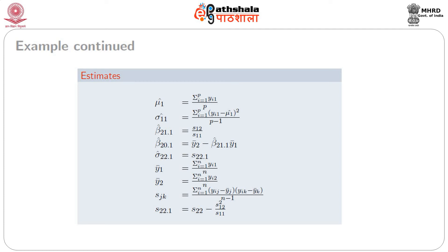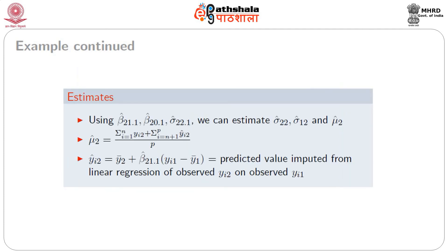Once we get beta_2_1.1 hat, beta_2_0.1 hat, and sigma_22.1 hat, we are in a position to get the estimates of mu_2 hat, sigma_22 hat, and sigma_12 hat. We can use the estimated value where mu_i2 hat equals y_2 bar plus beta_2_1.1 hat times (y_i1 minus y_1 bar). This is the predicted value imputed from the linear regression of observed y_i2 on observed y_i1. Using this idea of prediction from the imputed value of linear regression, we can obtain the imputed values of y_i2.